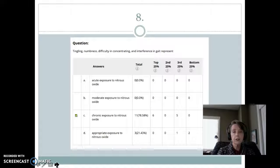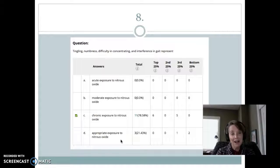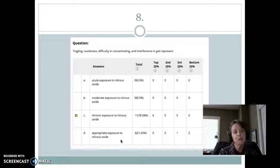Last but not least, this question related to chronic abuse of nitrous oxide. Tingling, numbness, difficulty in concentrating, and interference in gait represent chronic exposure to nitrous oxide. I can see how some of you thought it was appropriate exposure to nitrous oxide. Certainly tingling around in the hands and feet, numbness around the mouth, some difficulty concentrating, are certainly all the signs and symptoms we're going to be looking for in our classmates on Friday. But this question related to the chronic exposure to nitrous oxide.